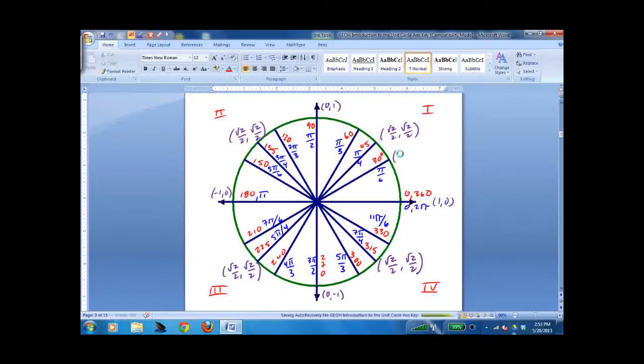This is root 3 over 2, 1 half. Flip it: 1 half, root 3 over 2. Keep it: 1 half, root 3 over 2. Flip it. Keep it: 1 half, root 3 over 2. Keep it: 1 half, root 3 over 2. Flip it: root 3 over 2, 1 half. Last but not least, the negatives.